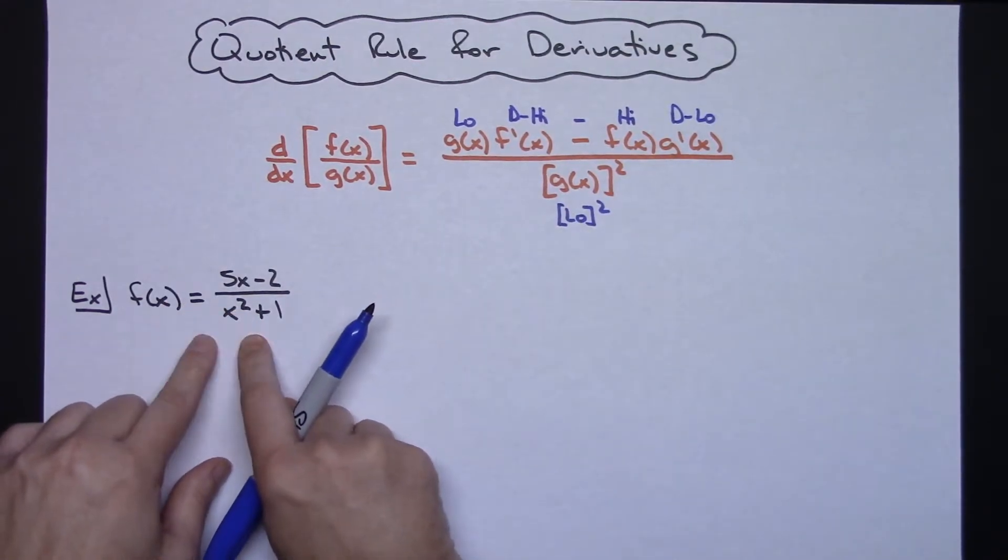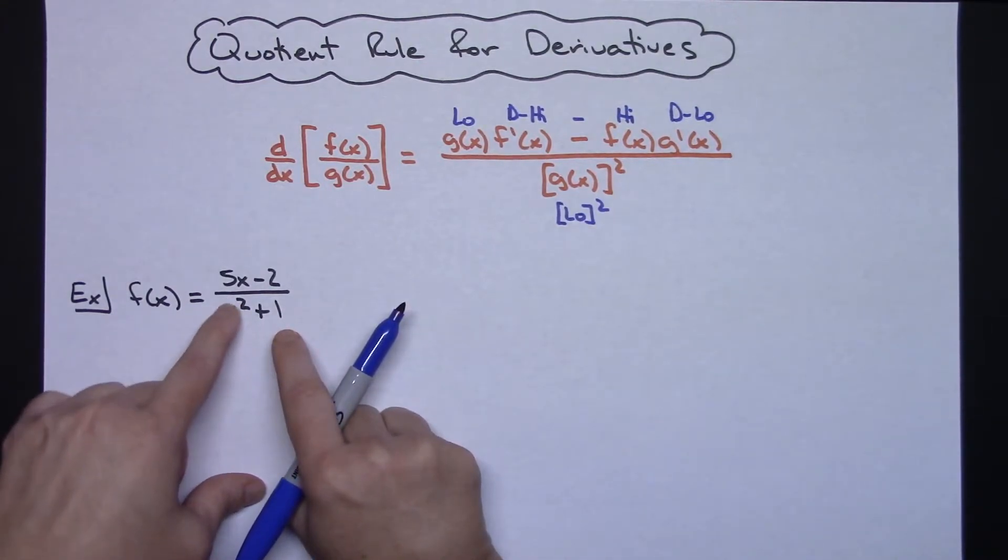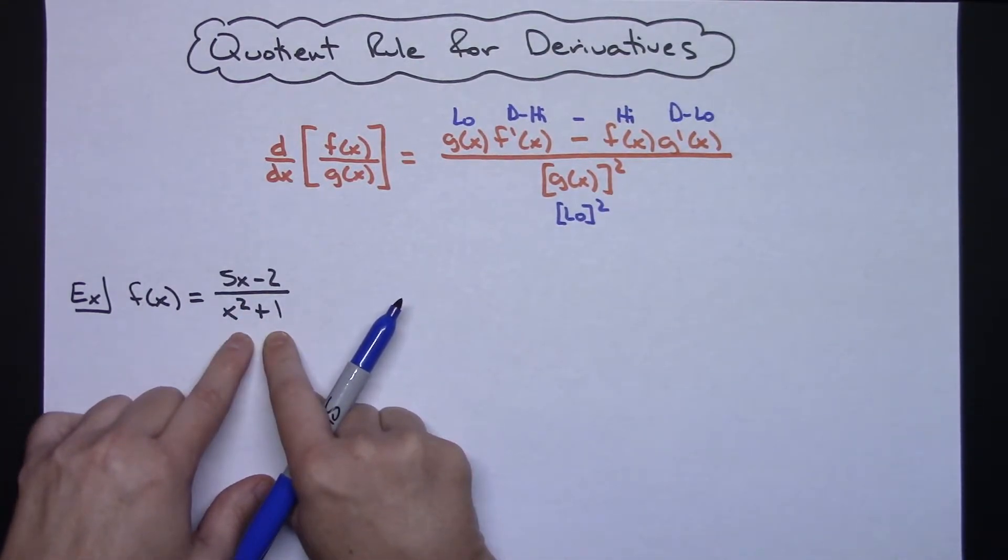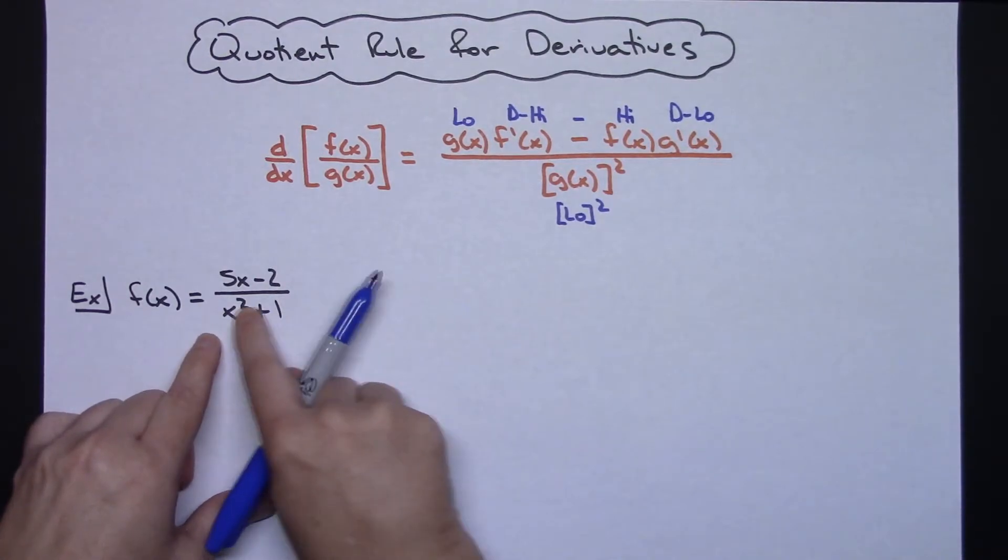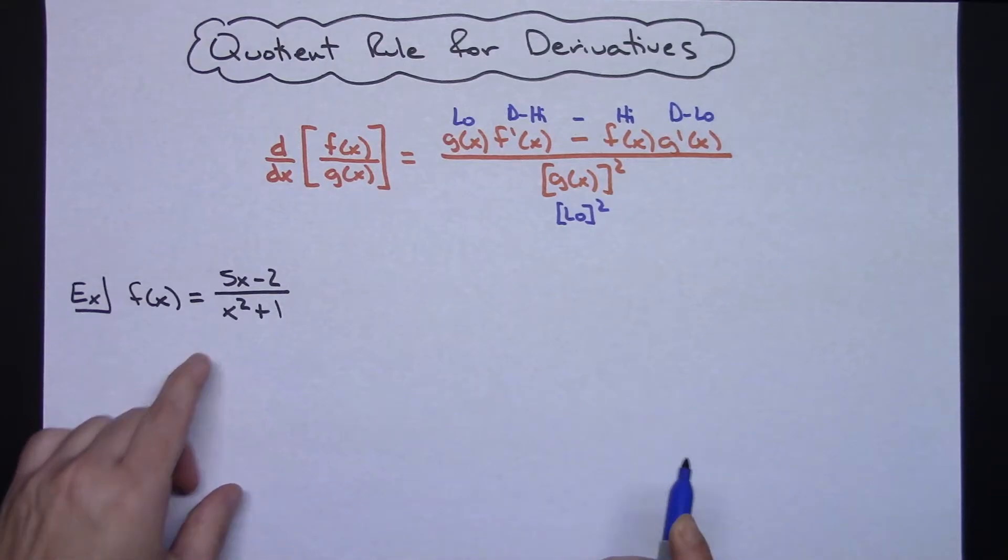Okay, so let's implement that on this straightforward quotient rule problem here. So let's say our function is (5x - 2) all over (x² + 1). Alright, so bottom function is x² + 1, top function is that 5x - 2.